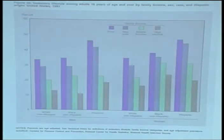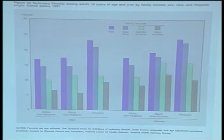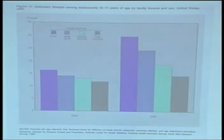But going back and looking at the adult slide, we see something very different. This illustrates the importance of looking across the lifespan — across the life course — to understand how social factors interact to affect population health.